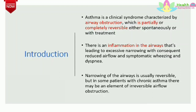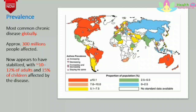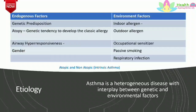Narrowing of the airway is usually reversible, but in some patients with chronic asthma there may be an element of irreversible airway obstruction. Prevalence means the proportion of a particular population found to be affected by a medical condition at a specific time. Prevalence of asthma: it is the most common chronic disease globally, with approximately 300 million people affected. It appears to have stabilized, with 10 to 12 percent of adults and 15 percent of children affected.